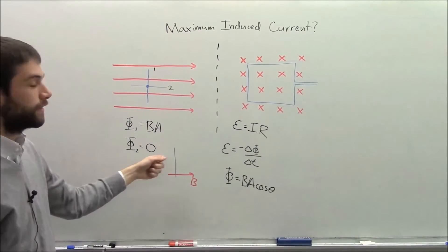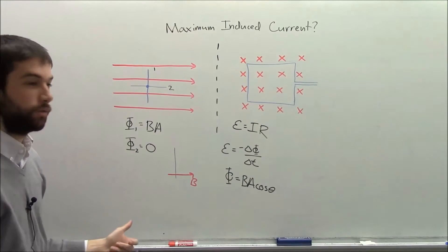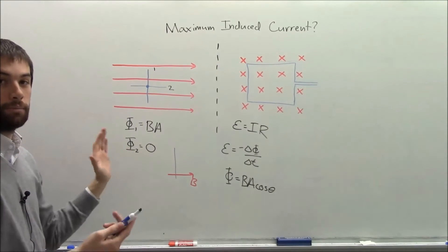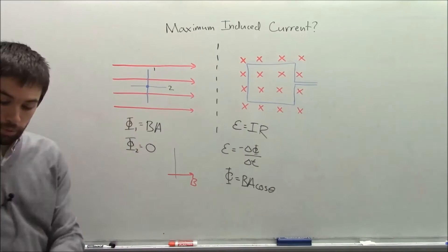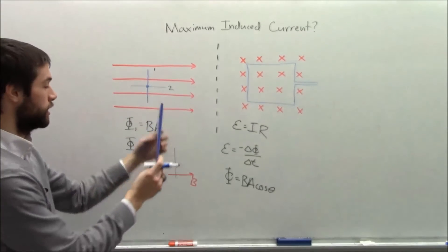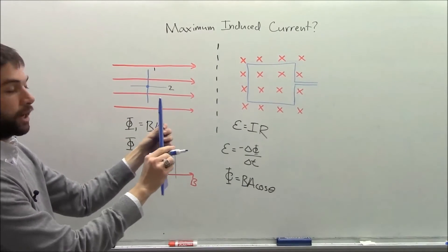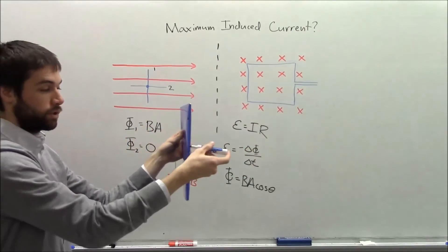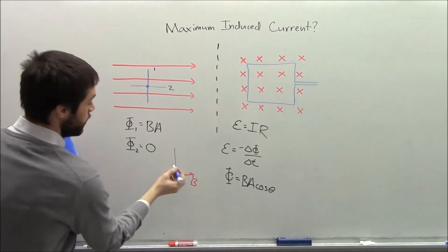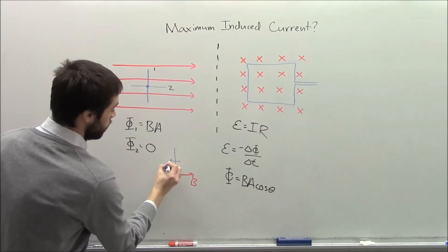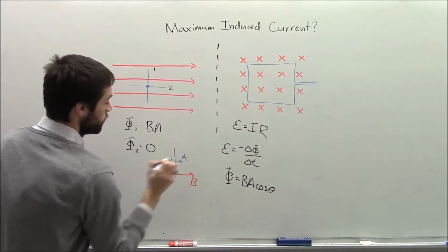And what we need to remember is that the area vector for a loop points perpendicular to its area. So if our loop, here's our loop again, right? If our loop is like this, that means that the area vector either points directly that way or directly this way. So in this case, our area vector has to point in one of these two directions, like that.